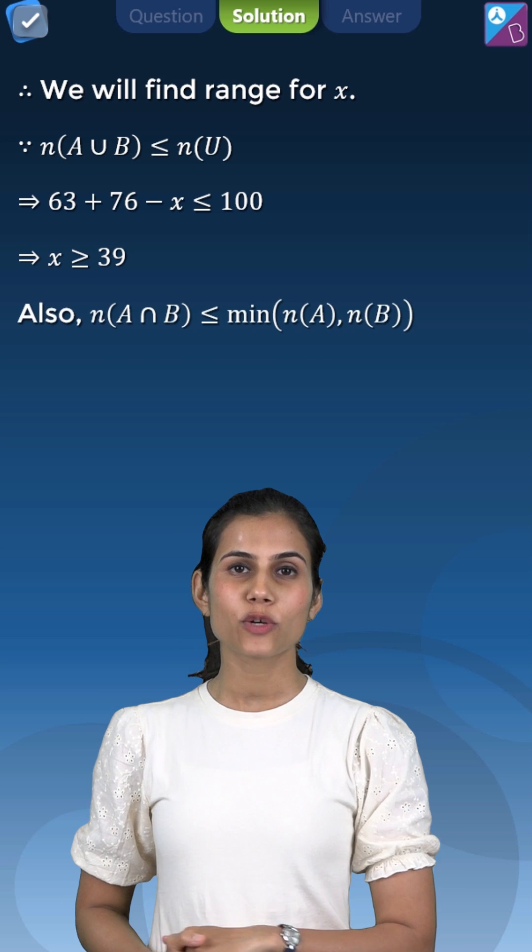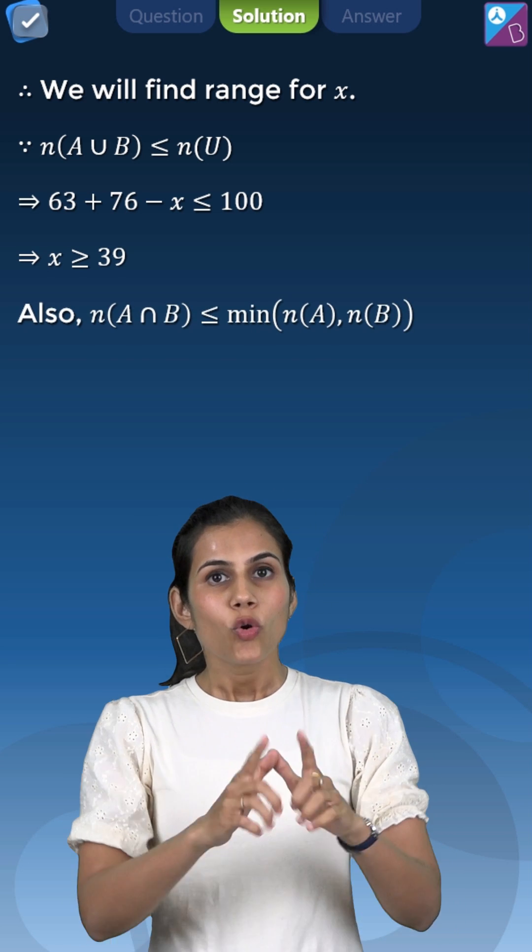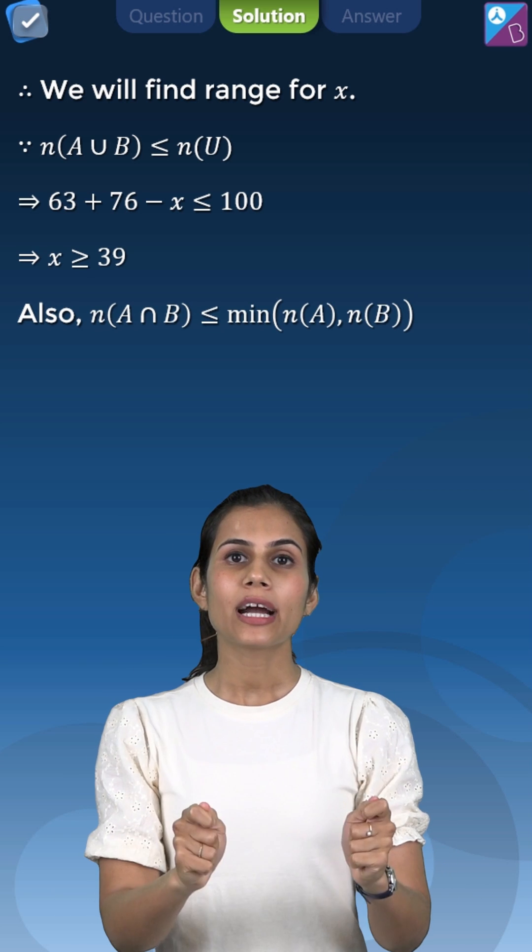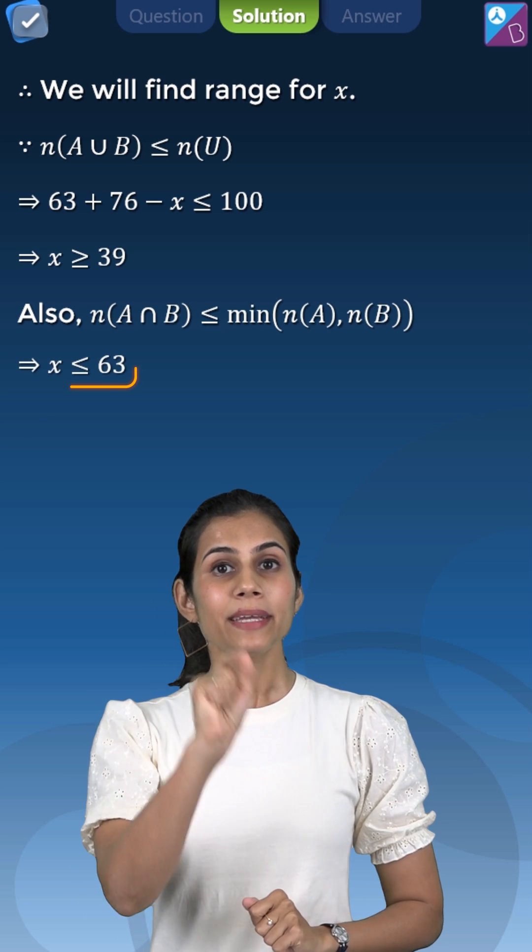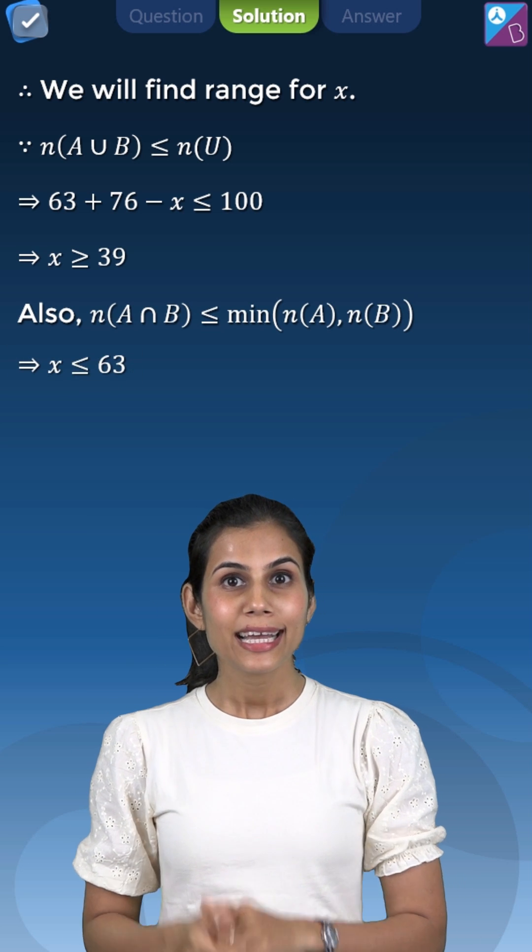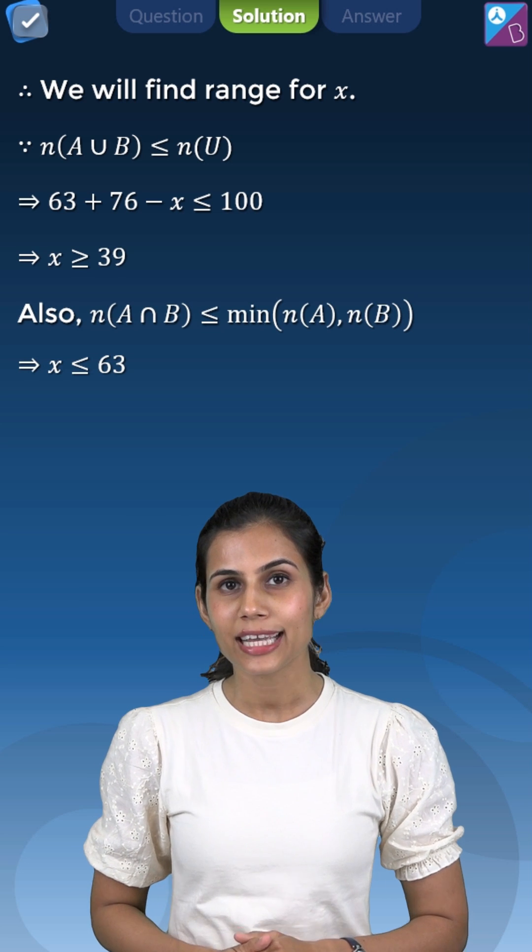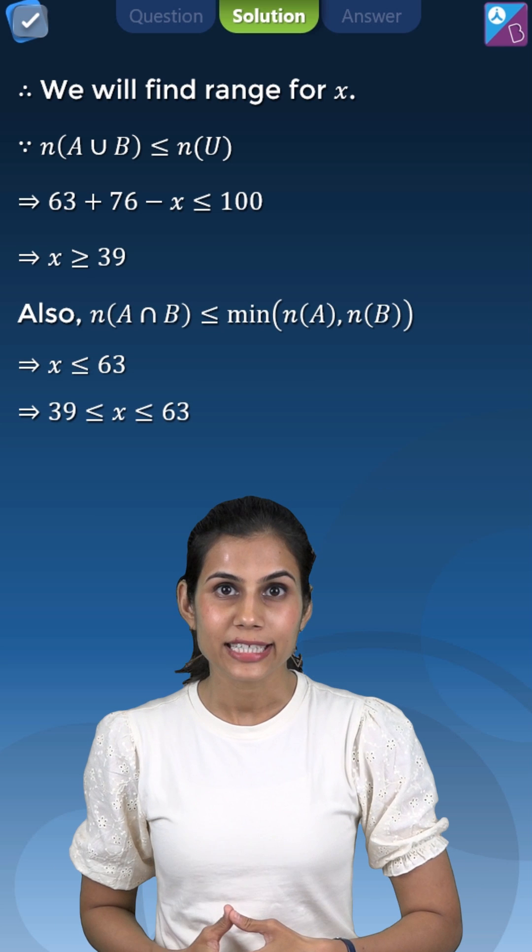Another important fact which we are already aware of is ki common members of A and B jo hai. Unki cardinality at max kitni hon sakte hai? Minimum of the cardinality of A and B. That means X can be at max equal to minimum of 63 and 76 which is nothing but 63. So X at most can be 63 and it is at least equal to 39.